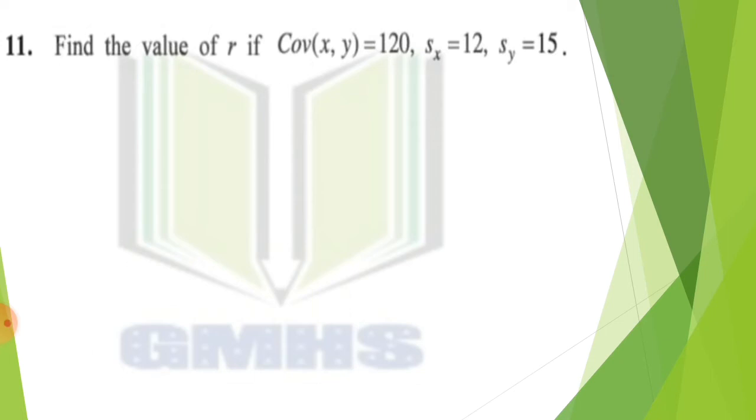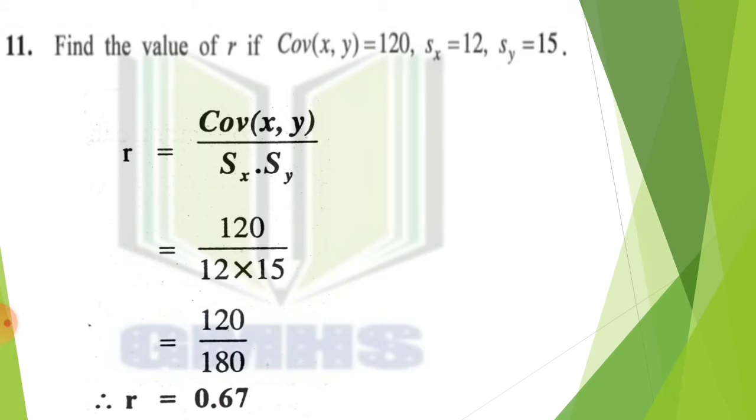So friends, covariance of XY, S of X and S of Y. You can see R formula that you can use here. Just in this formula, you can put all the values. This is a type of question in MCQs or 1 or 2 marks question you can ask normally. So you can see here, we have all the values in this formula, divide, and R of 0.67 we have got here.